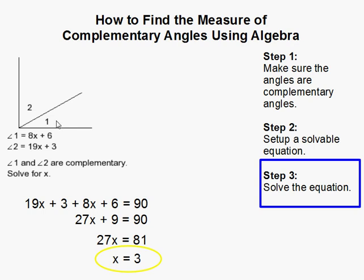and that makes sense, right? Because angle 1 was 30, angle 2 is 60, and 30 plus 60 equals 90 degrees. And that completes our problem.